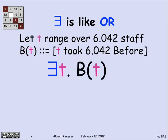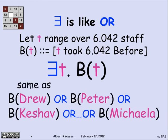Then if I tell you that there exists a t, B of t, what I'm telling you is that B of Drew, either Drew took it before, or Peter took it before, or Keshav took it before, or Michaela took it before. This statement is true because, in fact, several of the staff members took 6042 from me before.